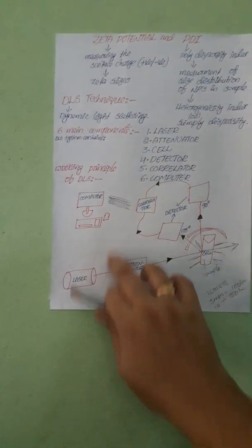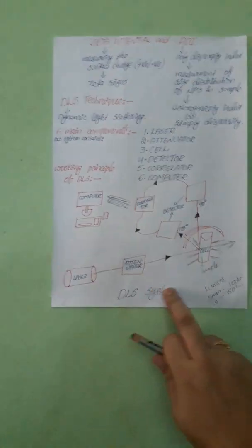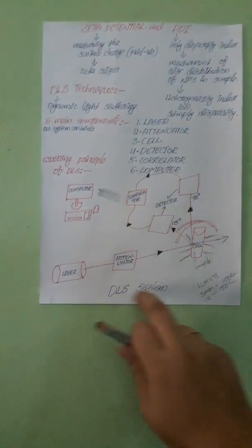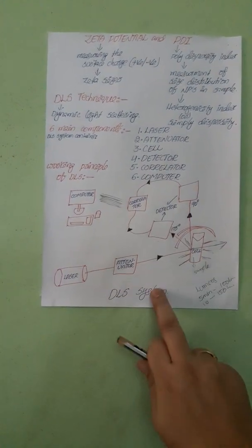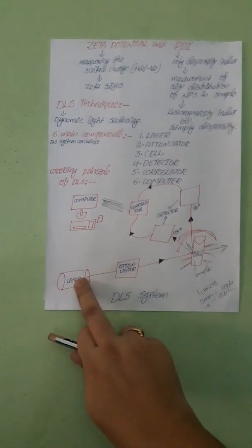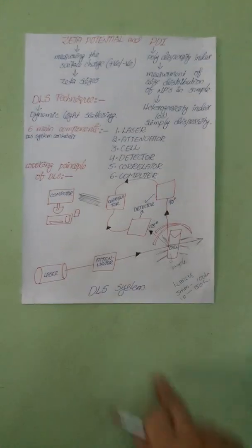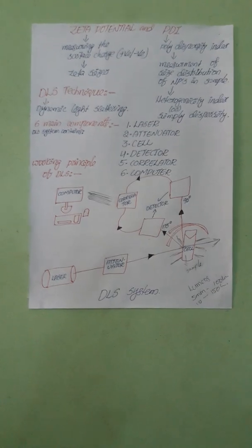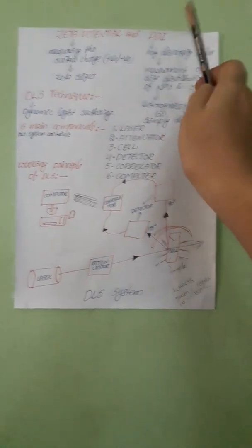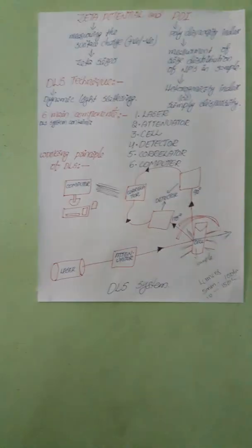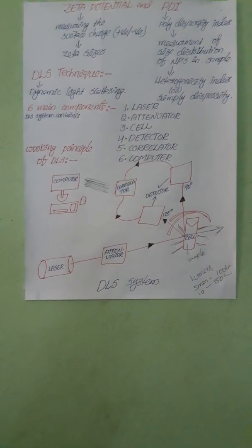This is about the DLS technique. We are measuring the zeta potential and polydispersity index based on one technique called the DLS technique. This DLS system contains six main components, and using these components we measure the zeta potential and polydispersity index. Thank you.